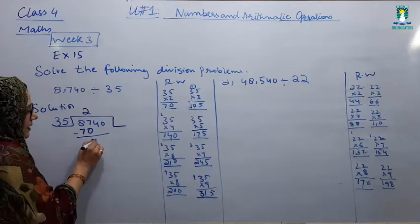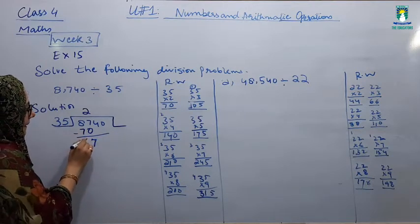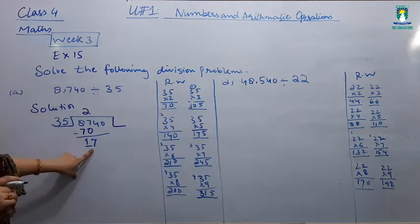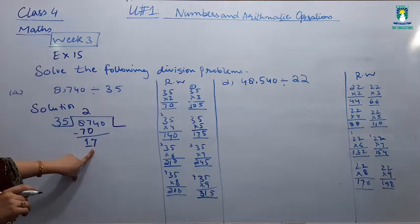Here we have minus. 7 minus 0 is 7. 8 minus 7 is 1. What are you? I am 1. 1 and 7 is 17.